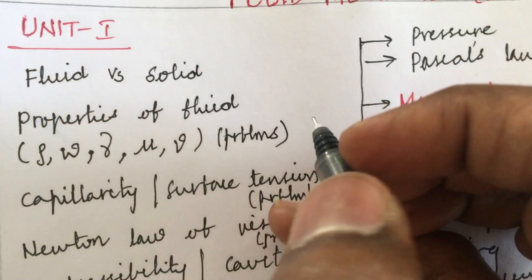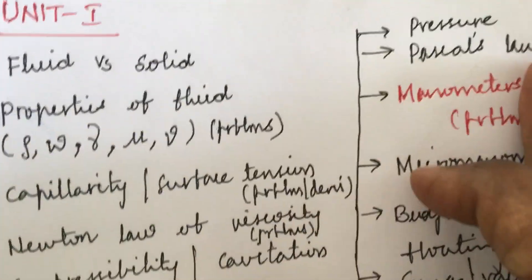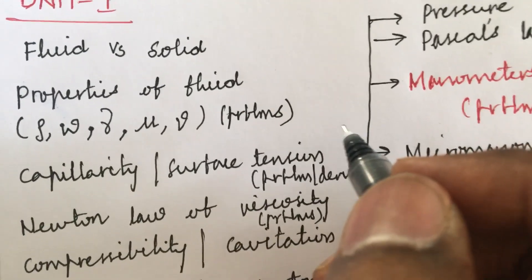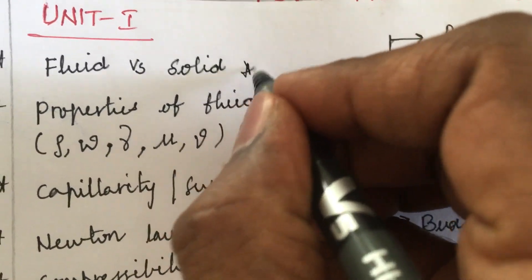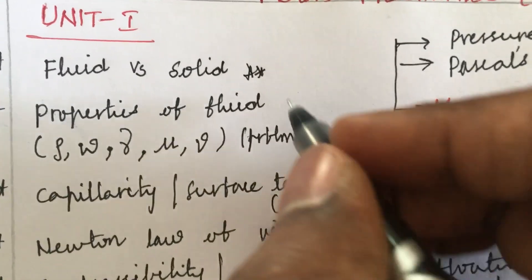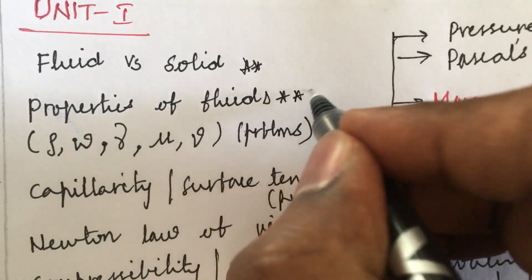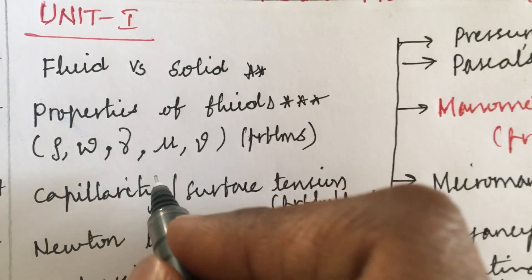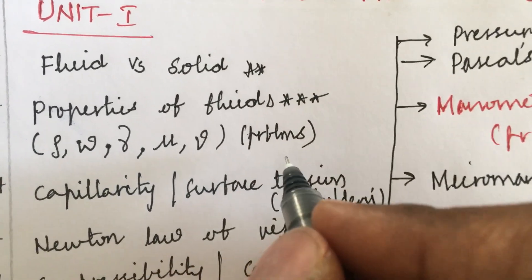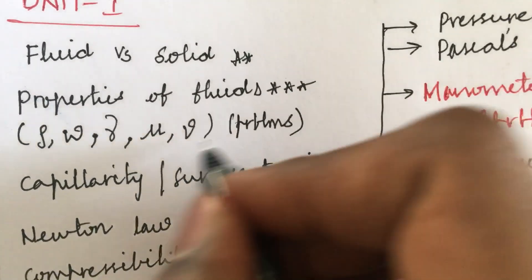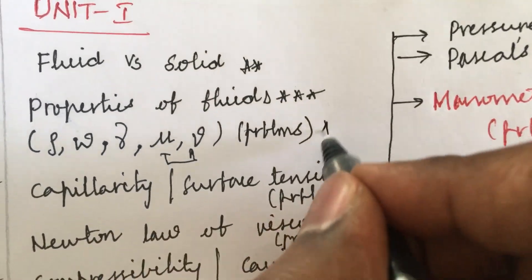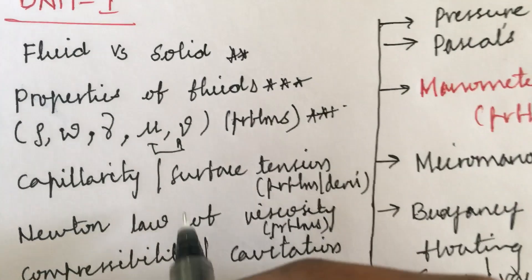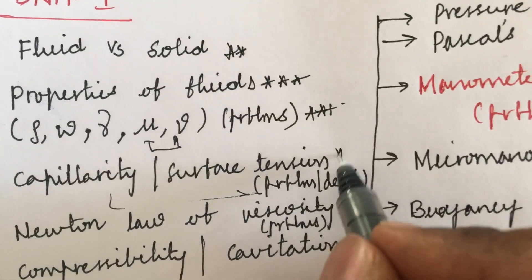The first unit I have considered is Unit 1, which covers basic fundamentals. Every student needs to go through this unit before taking this course. The difference between fluid and solid may be a short question, and the properties of fluids is a definite gunshot question. You are supposed to work out density, specific weight, specific gravity, viscosity, kinematic viscosity, dynamic viscosity, and the relations between them. Define the term capillarity — work out the derivation and problems related to it.